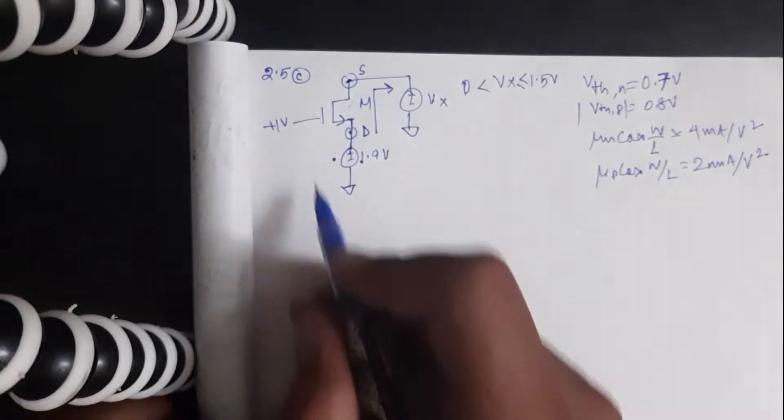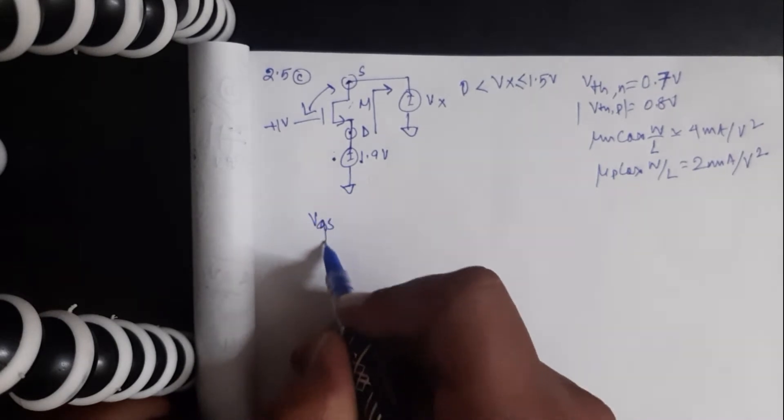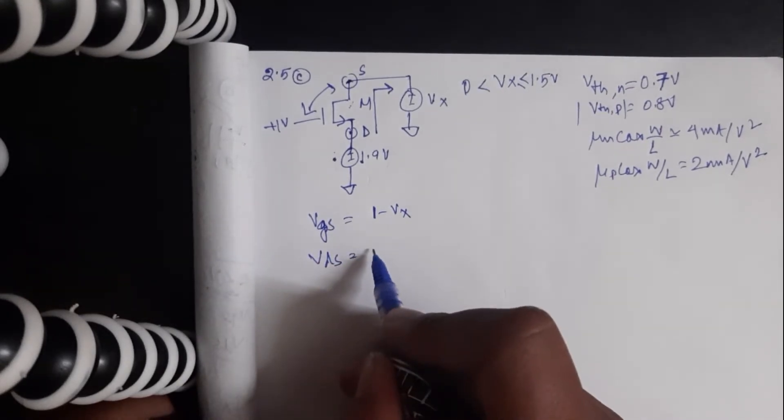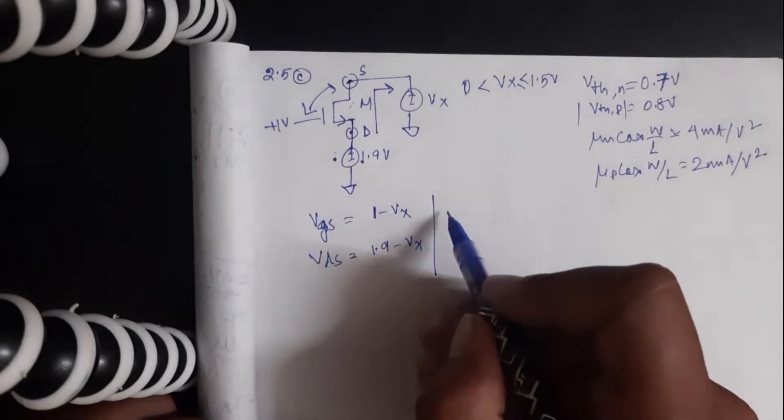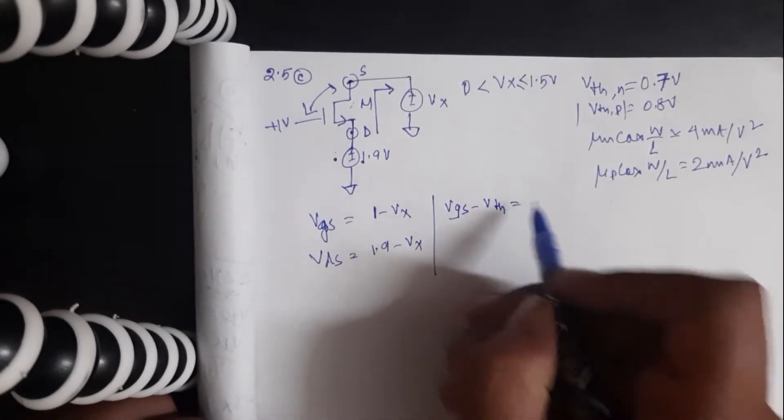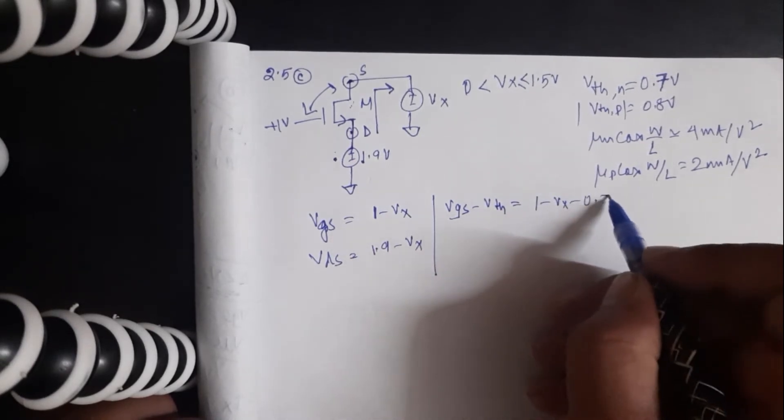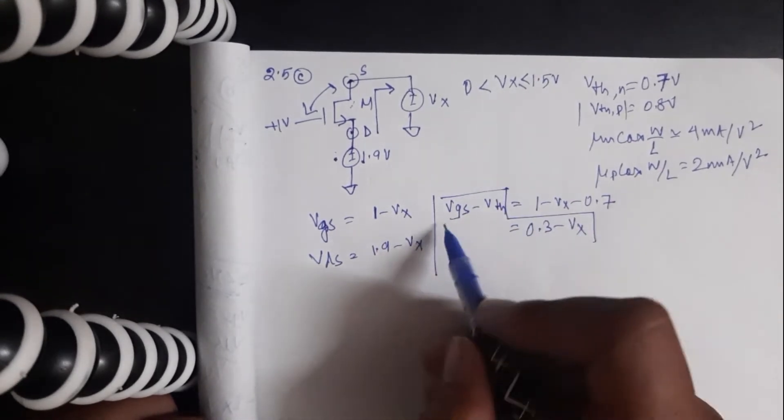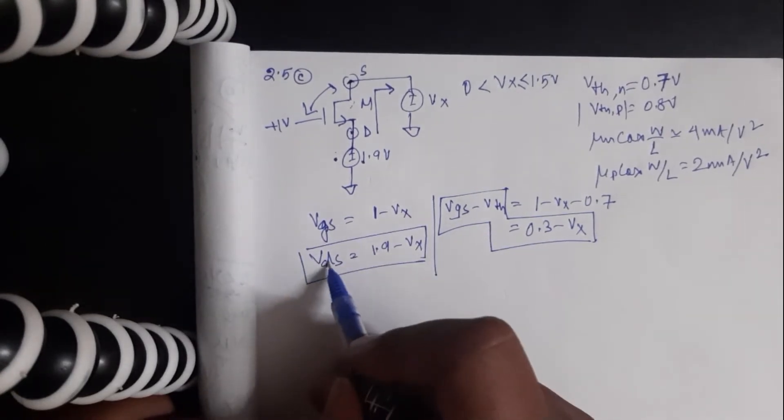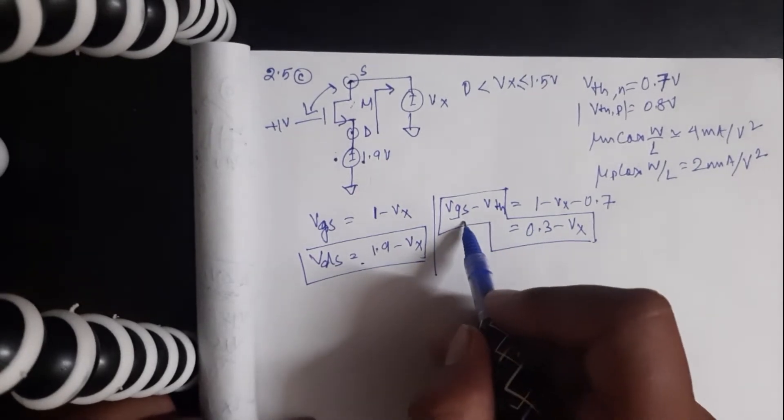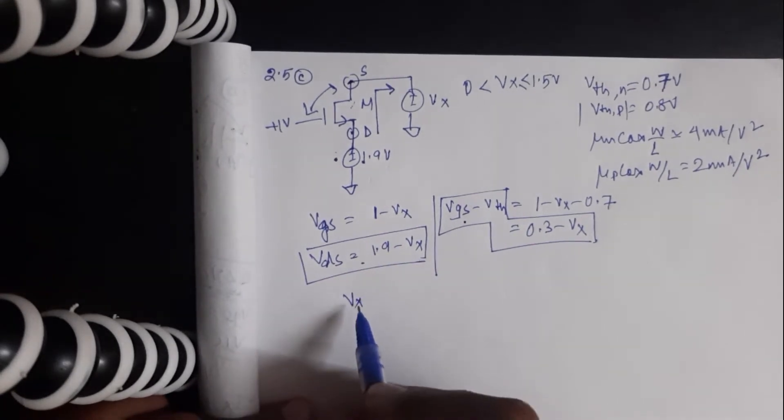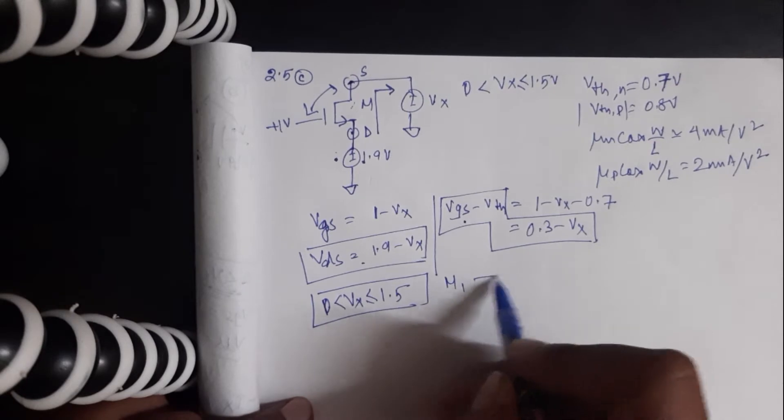Since this is the source, VGS is 1 minus VX, VDS is 1.9 minus VX. VGS minus VTH is 1 minus VX minus VTH, which is 0.7, which is 0.3 minus VX. You can clearly see VDS is always greater than VGS irrespective of the value of VX. So for the range of VX which is from 1.5 down to 0, the transistor is in saturation.